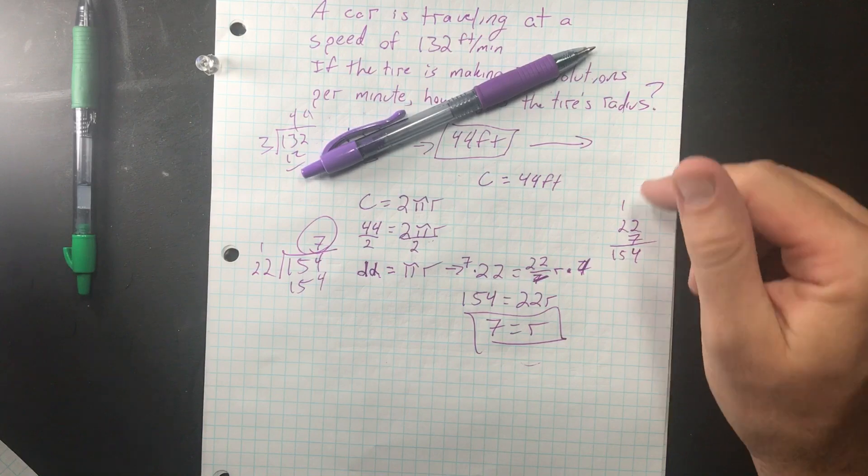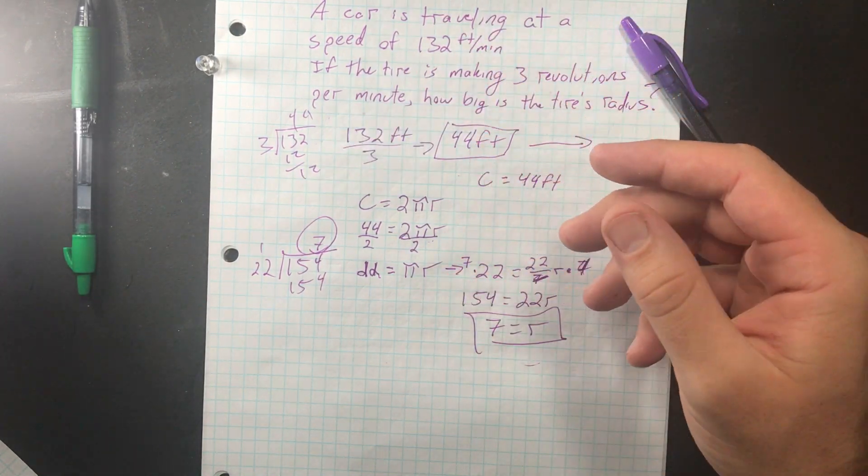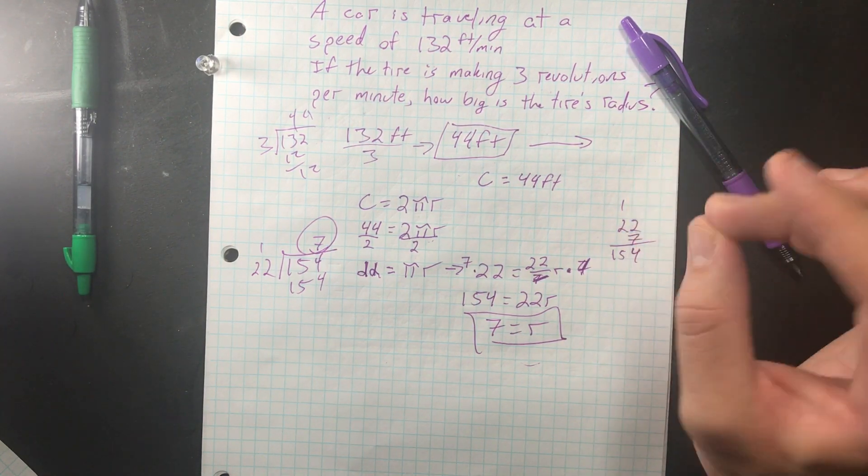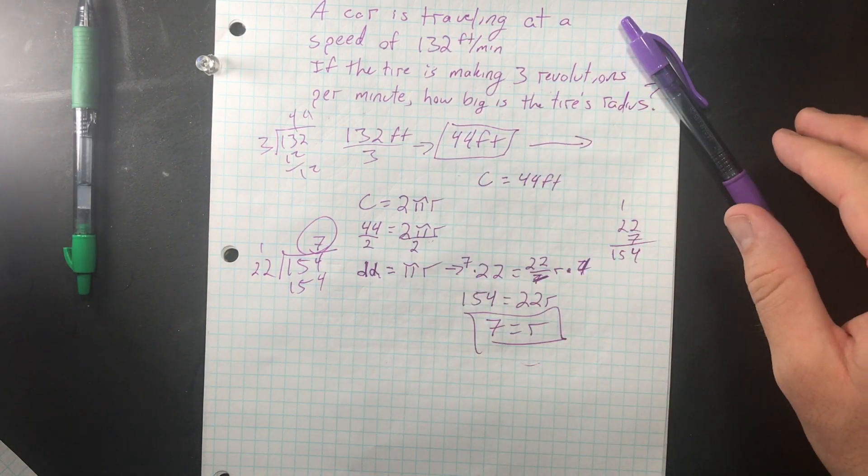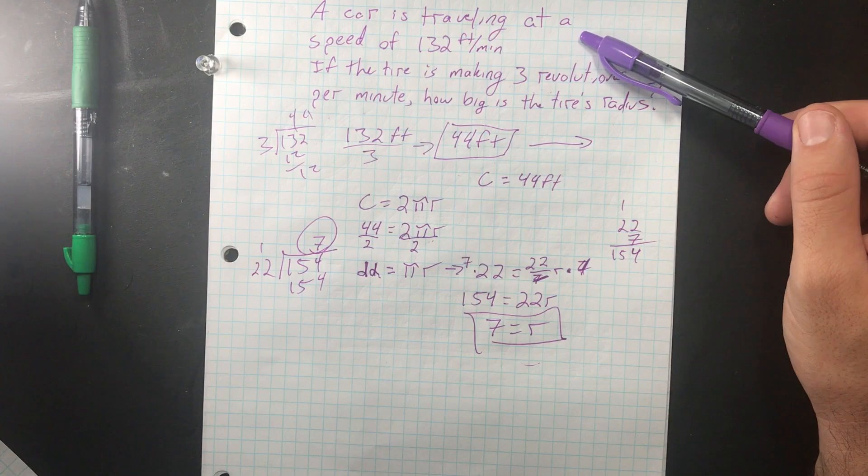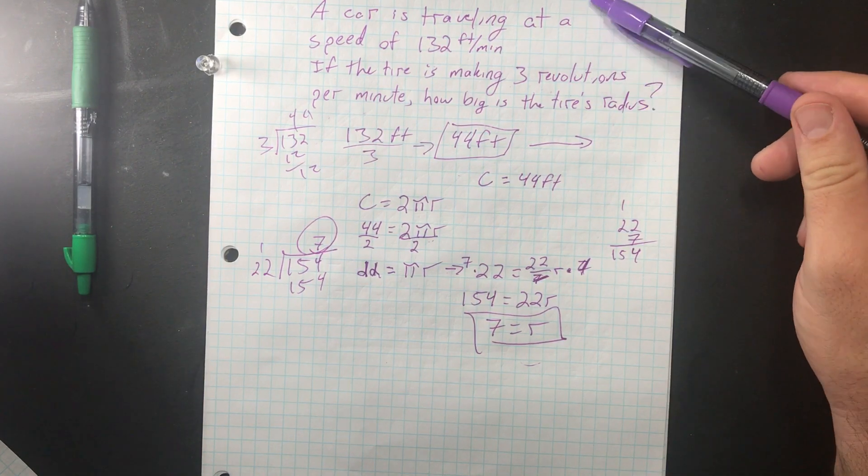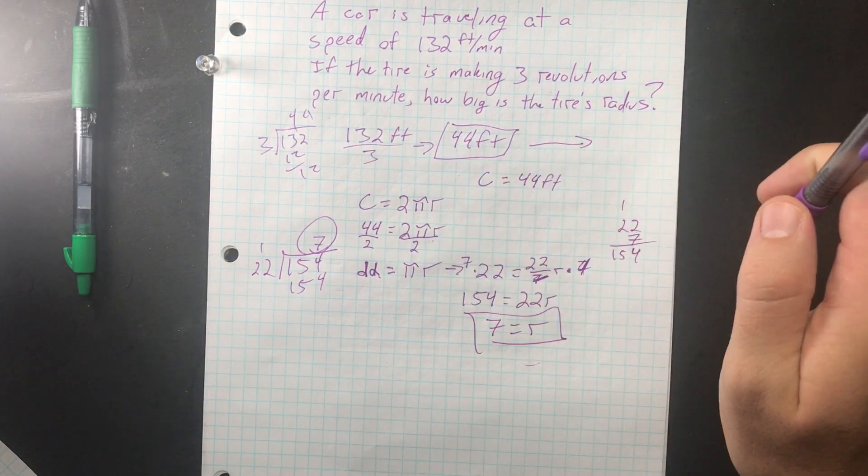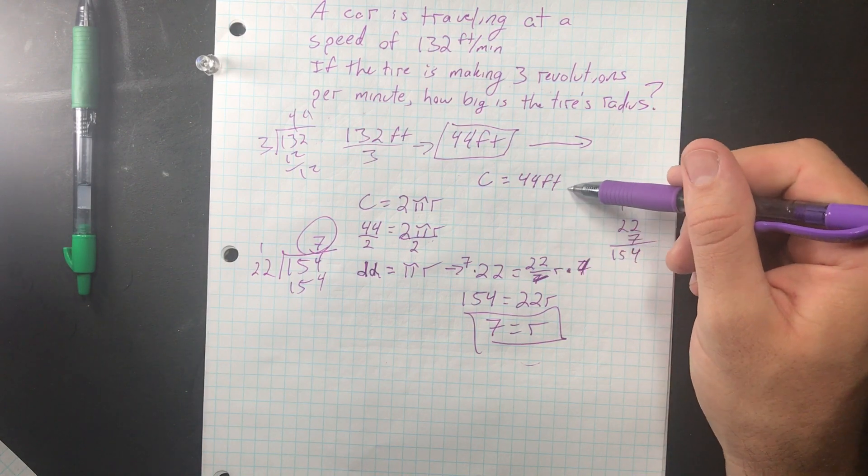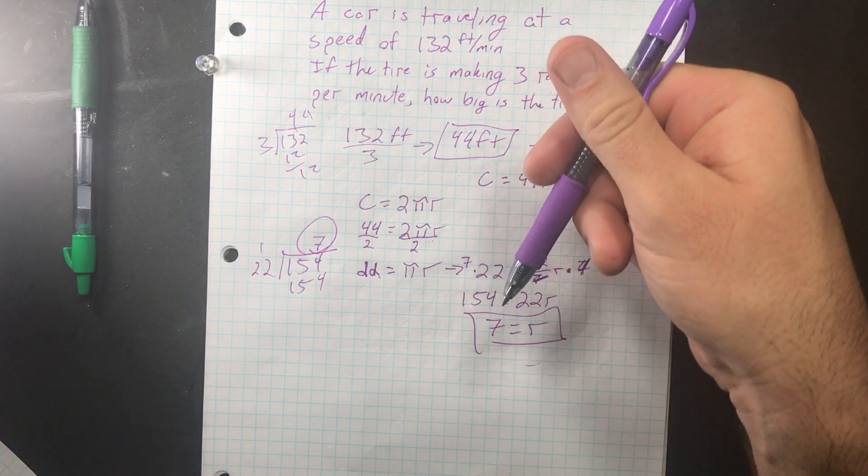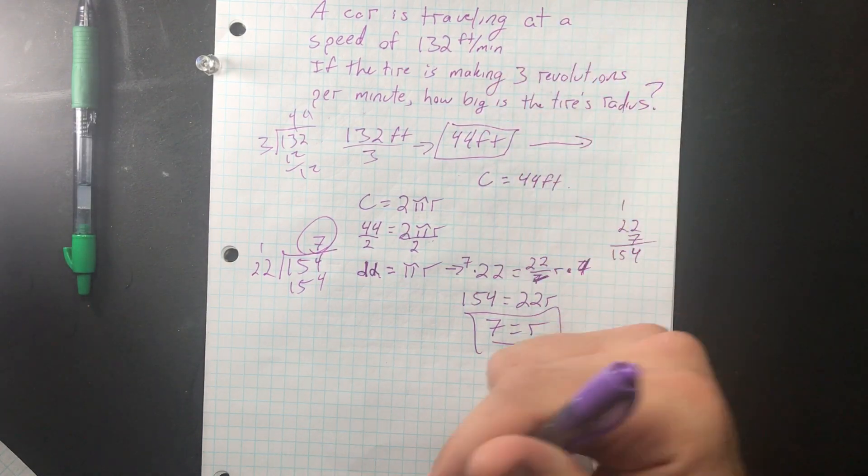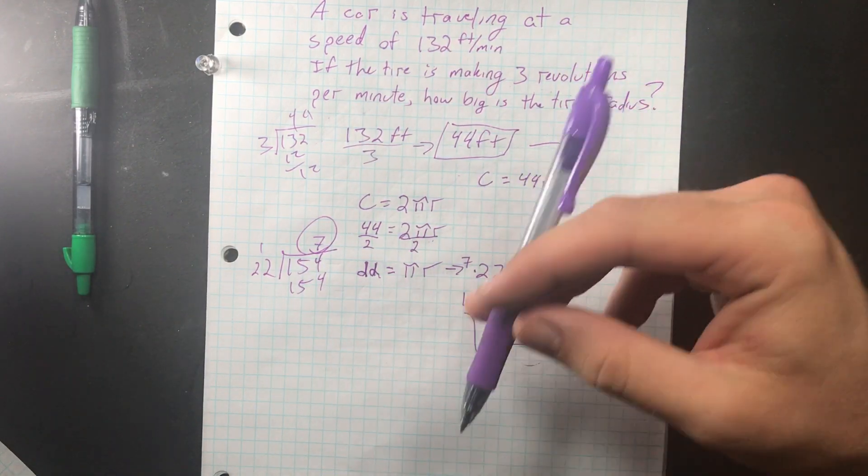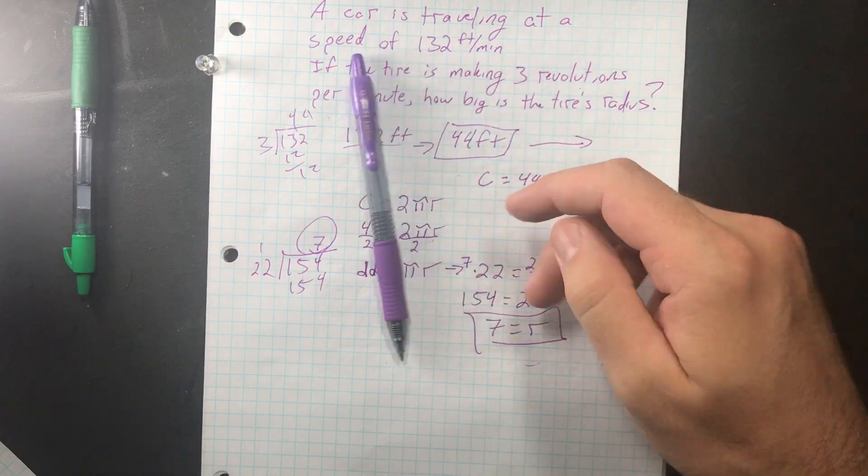So this is how you do revolution problems. Keep practicing on these because they were on the SHSAT practice booklet, so it's fair game for the test for them to do these. And you can go forward from the radius to the speed and find the revolutions, or you can go backwards with having the speed and revolutions and then finding the size of the tire. Either way, just keep in mind that you're going to be finding the circumference and that the circumference equals the distance that the tire travels every revolution. Well, if you have any questions about these, leave a comment below, like, and subscribe. And I will be live streaming on Thursdays at 6 p.m. So if you have any questions, I'll see you there.